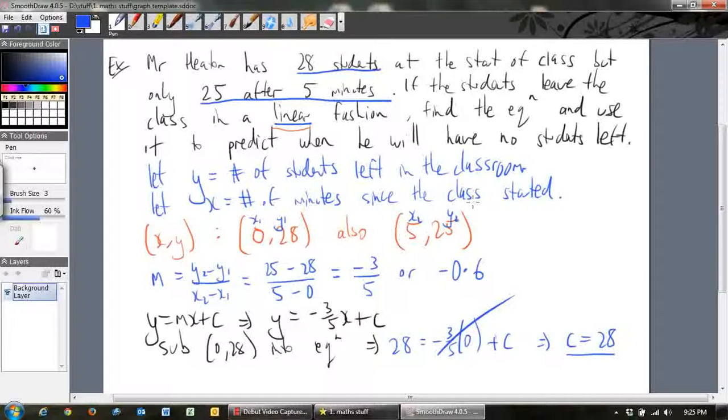Now I just want to show you something. We just got that the y-intercept is equal to 28. Remember what the y-intercept means? The y-intercept is when x is equal to 0. What is x in our example here? X is equal to the minutes since the class started. X is equal to 0 means where the class starts. So our y-intercept is just the number of students when the class started. We already knew that that was equal to 28. That number is up here. So if you knew that, you could have actually used that point to go, well, that is just c. So if you're clever, you can do that. So this means that the equation is y equals mx plus c, so negative 3 fifths x plus c. c was 28, so plus 28. Now, that is the equation of the line.